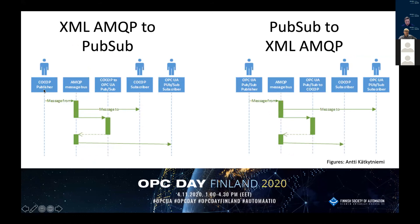In practice, we have a publisher that publishes XML data onto the same AMQP message bus. Any existing subscriber can make use of that data. But with configuration, we then managed to have this adapter pick up certain messages that a PubSub subscriber needs — the adapter picks up the messages, translates them, puts them back on the message bus, and then they are subscribed and consumed by the PubSub subscriber. Similarly, the same process goes the other way: if we have OPC UA PubSub data available on the message bus, an adapter translates those to the COOP subscribers using the XML format.